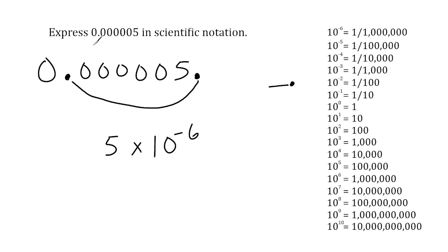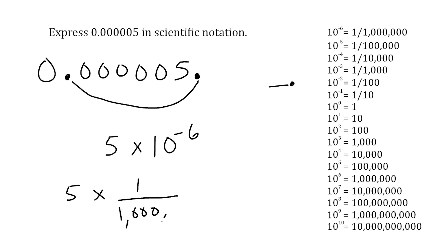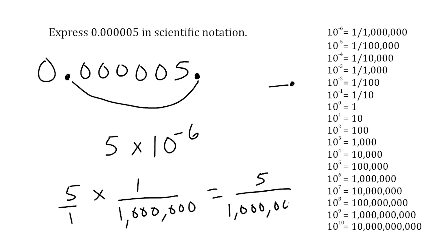When the number in standard form you start with is less than 1, that indicates right away that your exponent is going to be negative. This expression means 5 multiplied by 10 to the negative 6 power. 10 to the negative 6 equals 1 over 1 million. Multiplying 5 by that fraction gives 5 over 1 million — and that is exactly what we started with: five-millionths written as a decimal.